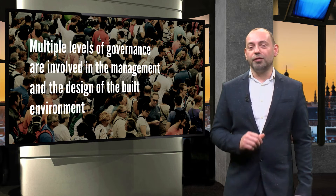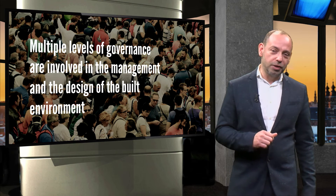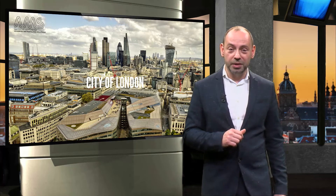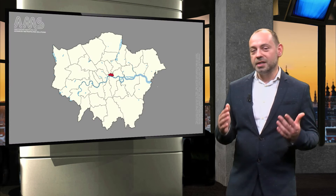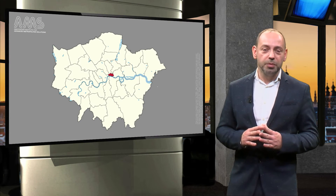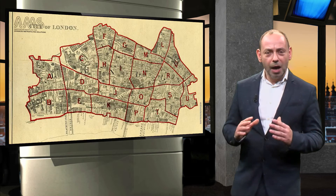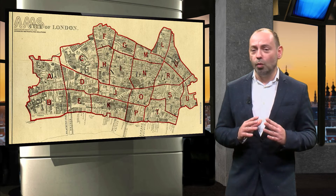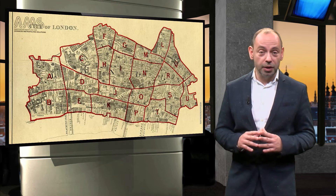Let's take an example of governance in which multiple levels are involved in the management and design of the built environment. Let us look at the City of London in the UK. The City of London is a county within the large metropolis of London. Its origins can be traced to the Roman period, when it was called Londinium. It now represents only a tiny part of Greater London, occupying an area of one by one mile in the centre of the metropolis.